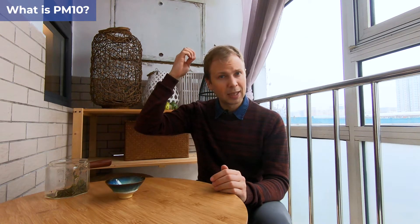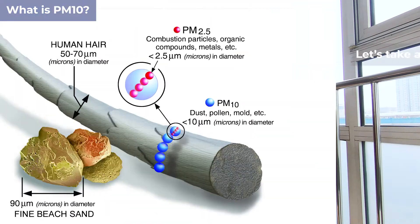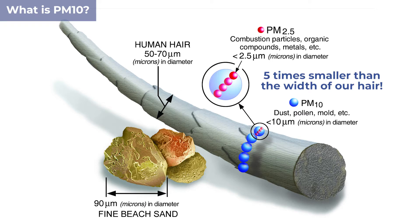So just how small is that? I'm going to pull out one of my hairs to give an indication. PM 10 is roughly five times smaller than the width of a hair. We can just about see a hair — imagine something five times smaller than this, and you're talking pretty much the size of PM 10. Pretty small, but possibly still visible to the naked eye under some circumstances.